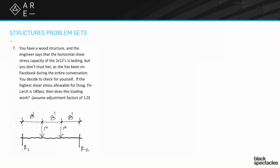If the highest shear stress allowable for your Douglas fir larch is 180 PSI, does this loading work? We have a beam here that's symmetrically loaded. The maximum shear through a beam like this is going to be at its end span. By symmetry, I'll say it has one kip of reaction at each end of the beam. That's our shear.